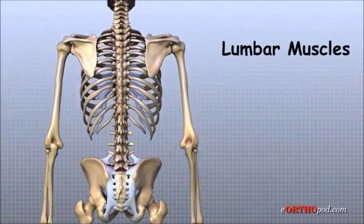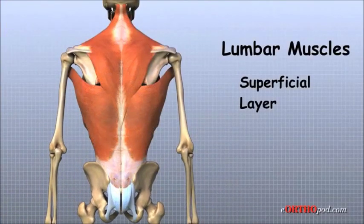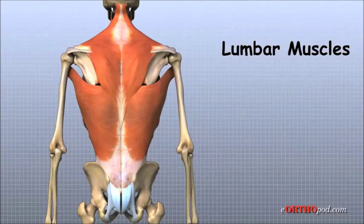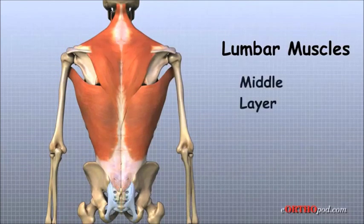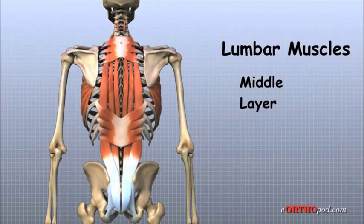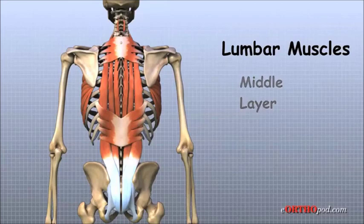The muscles of the low back are also arranged in layers. Those closest to the surface are covered by a thick tissue called fascia. The middle layer runs up and down over the lower ribs, chest, and low back. They blend in the lumbar spine to form a thick tendon that binds the bones of the low back, pelvis, and sacrum.